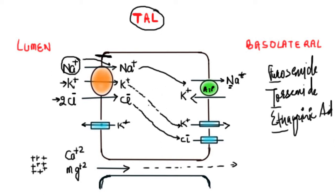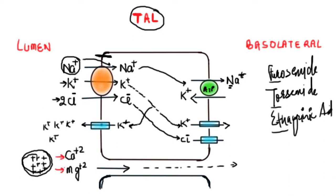Since intracellular potassium is high, some potassium diffuses back into the lumen via another transport protein. This potassium back-diffusion increases the positive potential within the lumen, and as a result of this positive potential, cations like calcium and magnesium are pushed across the cells via a paracellular pathway and also get reabsorbed into the blood.